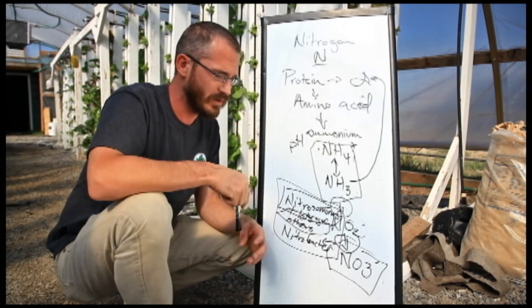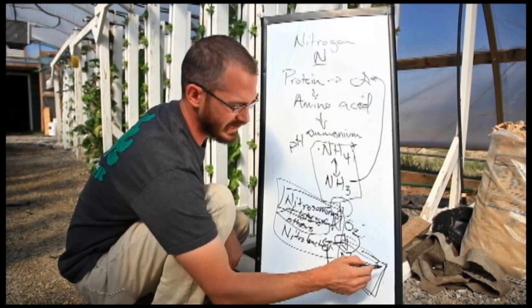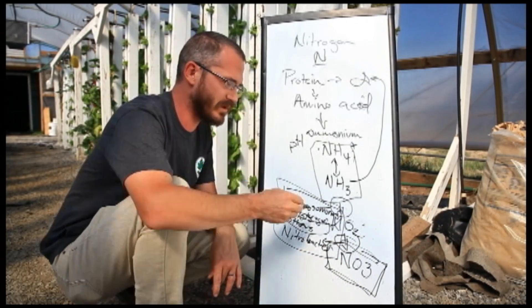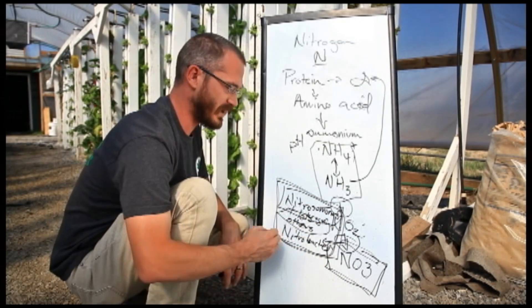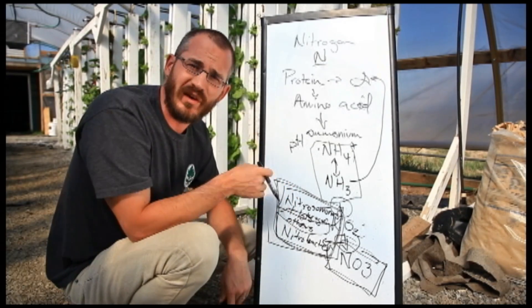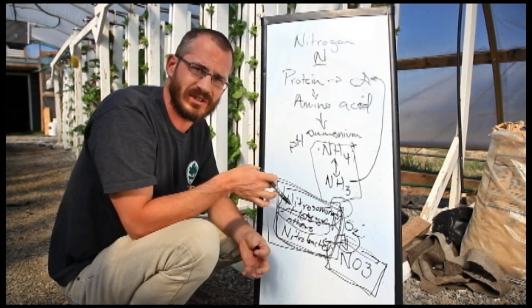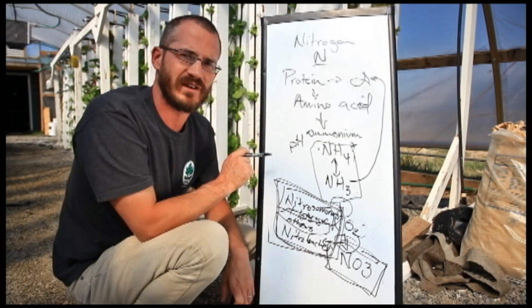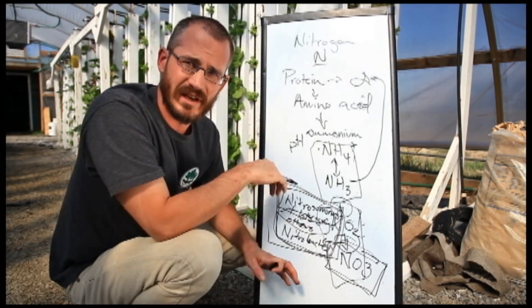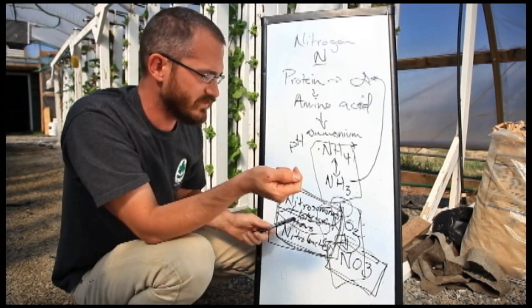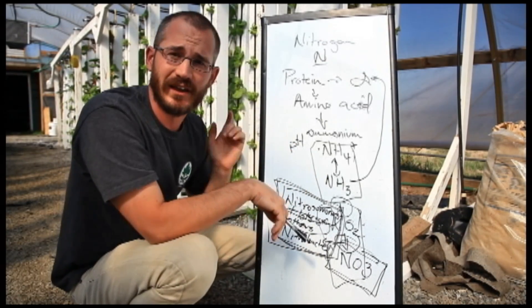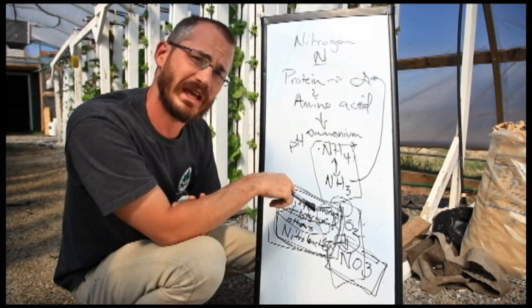In the next video, we're going to talk about what happens to nitrate once it's in the system and where it goes. We're also going to talk about nitrifying bacteria, because they're very important but also fragile. We need to make sure we're treating our bacteria right, or we're not going to get the most important thing out of our system—the oxidation reaction of ammonia to nitrate. This is Nate Storey with Bright Agrotech. If you like our videos, please subscribe and check out our vertical food blog.